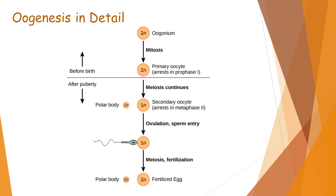The Graafian follicle ruptures to release the secondary oocyte under a process called ovulation. This means ovulation releases the secondary oocyte, not the ovum. The secondary oocyte is picked up by the fallopian tube with the help of its fimbriae. Here in the fallopian tube, if this secondary oocyte is fertilized by a sperm, it completes meiosis second. Fertilization acts as a stimulus for the secondary oocyte to complete meiosis second.